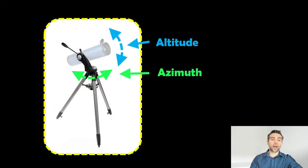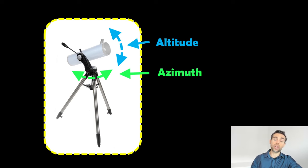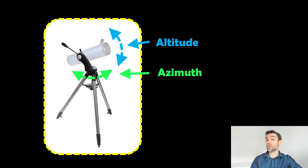On the actual mount itself it looks like this. You've got two axes: the vertical movement positioning of your telescope is your altitude, and the rotational one is your azimuth. To track an object, both of them need to be moved.